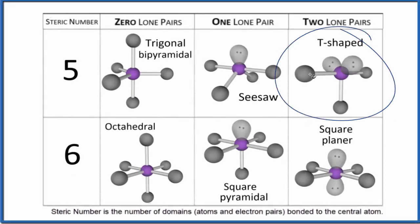Let's take a look at the T-shaped molecular geometry. So to start out with, for the T-shaped molecular geometry, we have what's called a steric number of five.